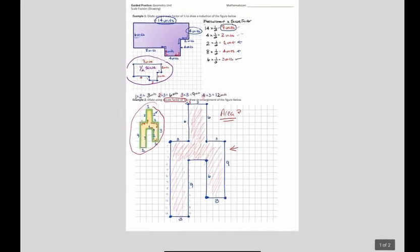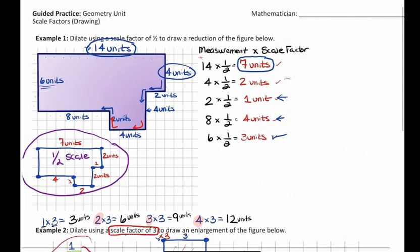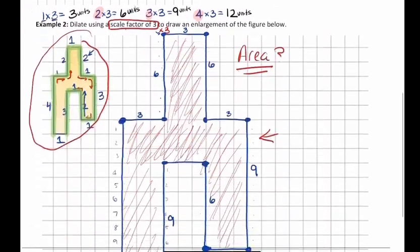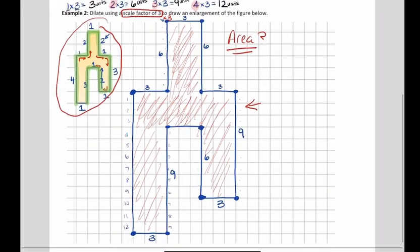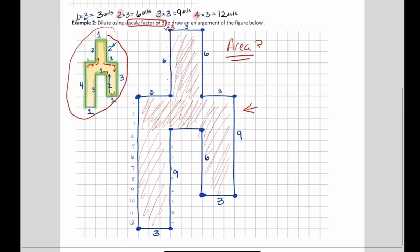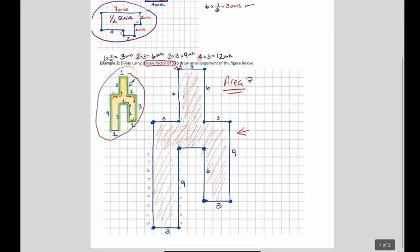So we did a reduction where it got smaller because we multiplied by a fraction on all those dimensions. And we did another example where we did an enlargement, so everything got bigger. That's how it should work. The toughest part of this is just doing the drawing itself, and as you can see, the drawings can get complicated.